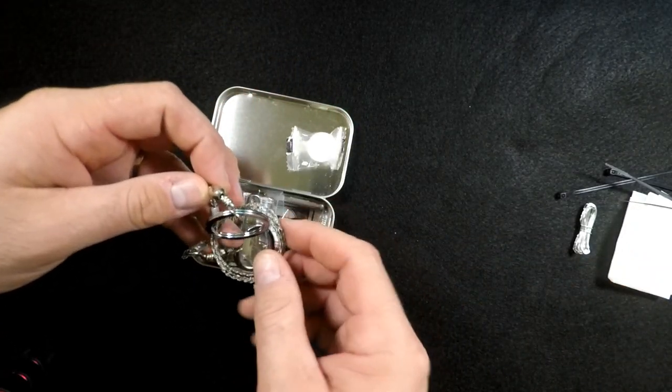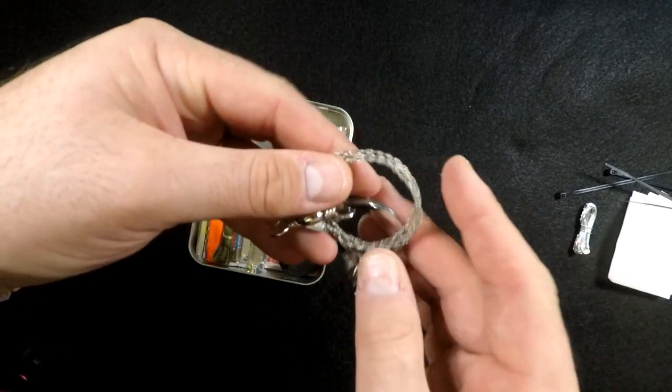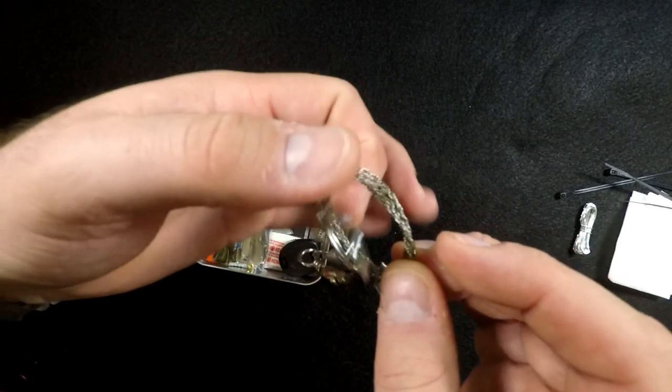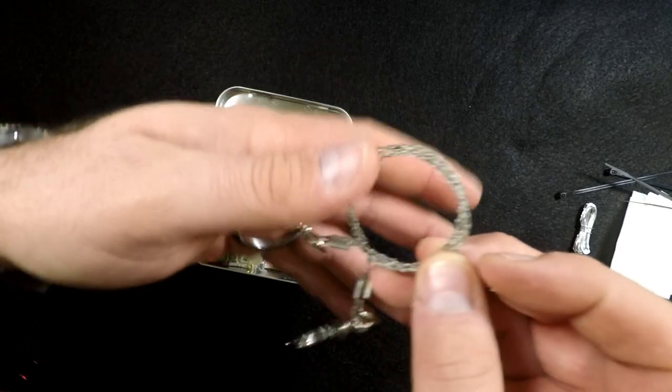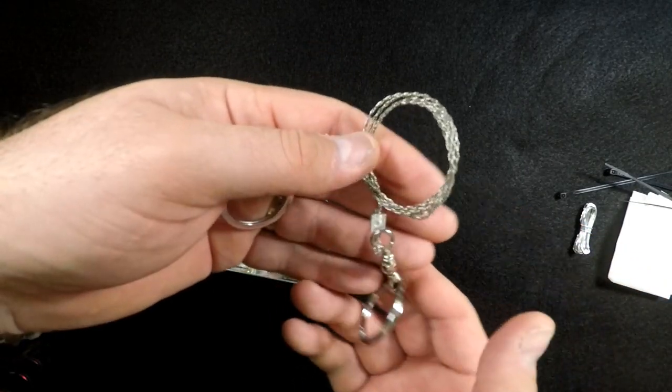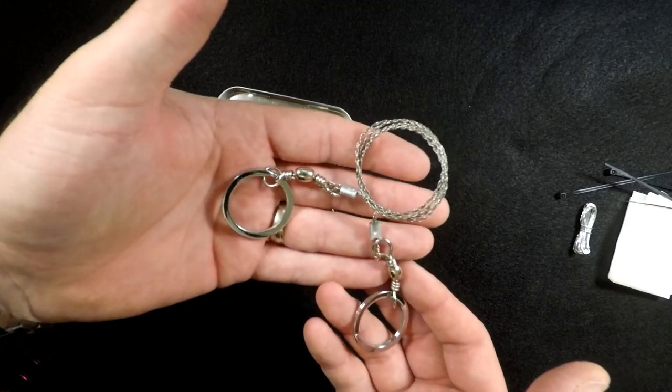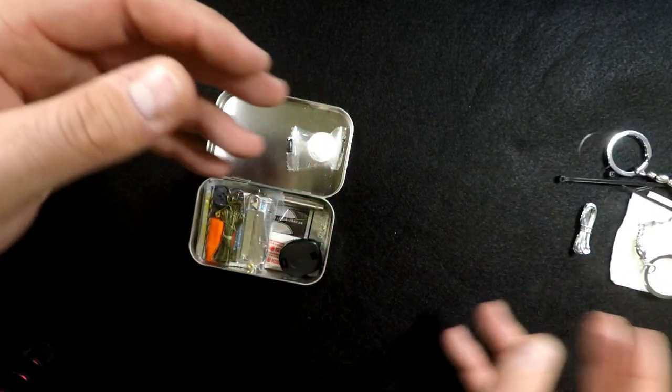Next thing we got in there is a piece of wire. That wire can be used for making snares or anything else you need to use it for, binding things together and whatnot. Pretty self-explanatory. Next thing is a wire pull saw.